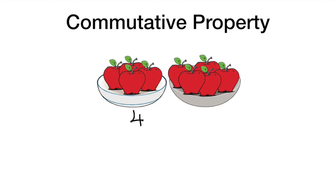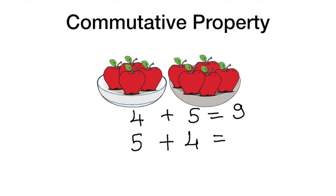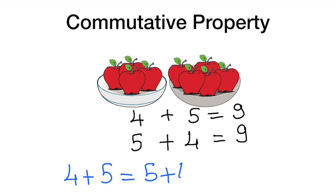there are four apples; in the second one there are five apples, and in total there are nine apples. What if I started counting the second plate first? There are five apples, then four apples — total nine apples. As you see, four plus five equals five plus four. Commutative means moving around — changing the place of the numbers didn't change the sum. That's why addition has the commutative property.